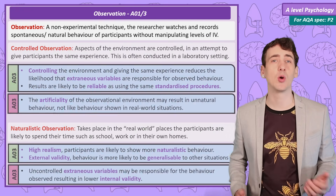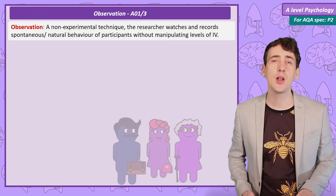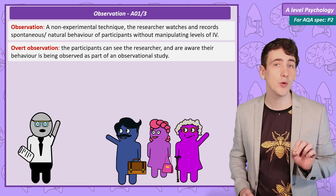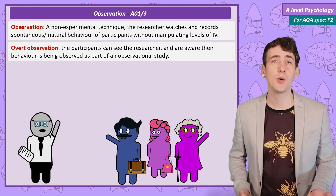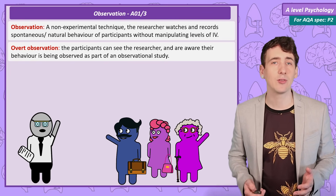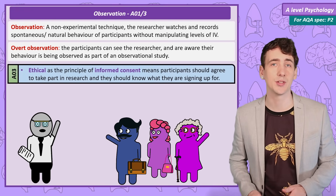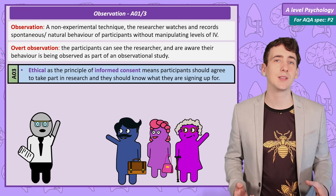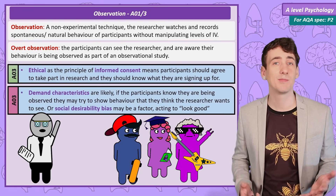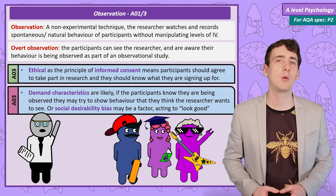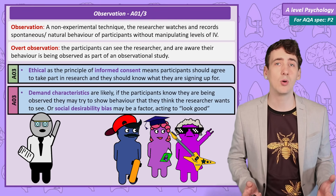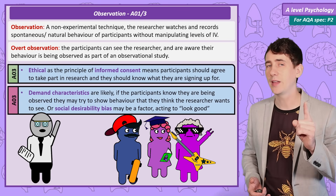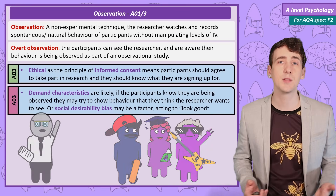Another choice is between overt or covert observation. In an overt observation, the participants can see you and, critically, they know they are being observed. This is important when you consider that one of the ethical guidelines is participants needing to agree to take part in research. The weakness is that as soon as someone knows they are being observed they are going to change their behaviour — maybe to look good or to give the researcher results they think the researcher wants. This is demand characteristics.